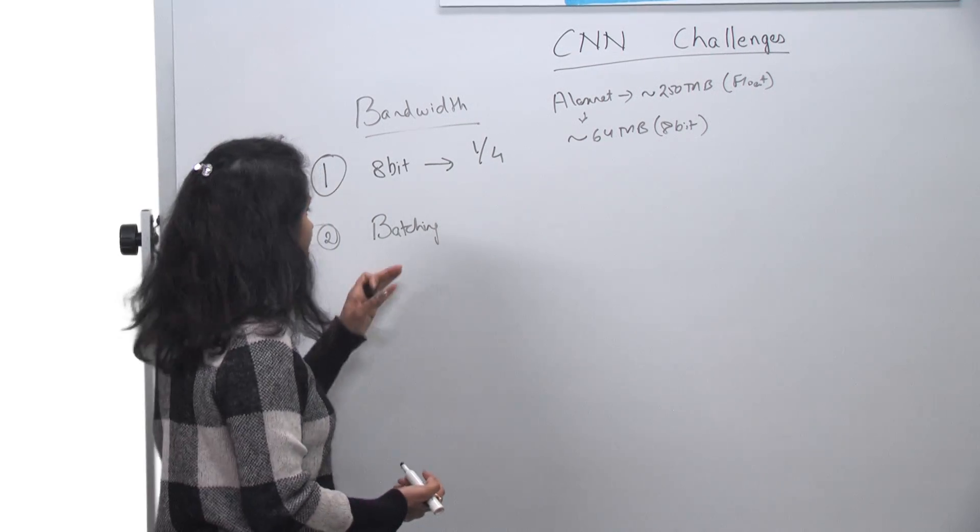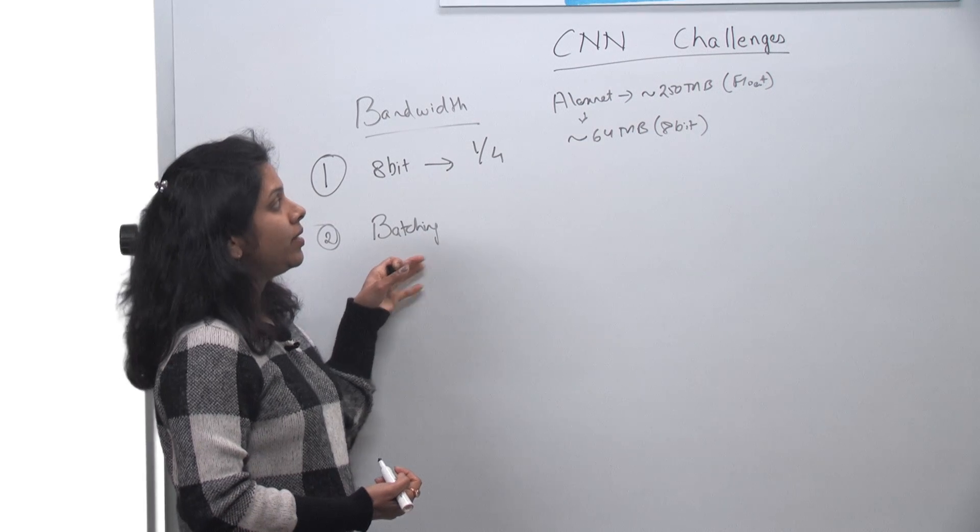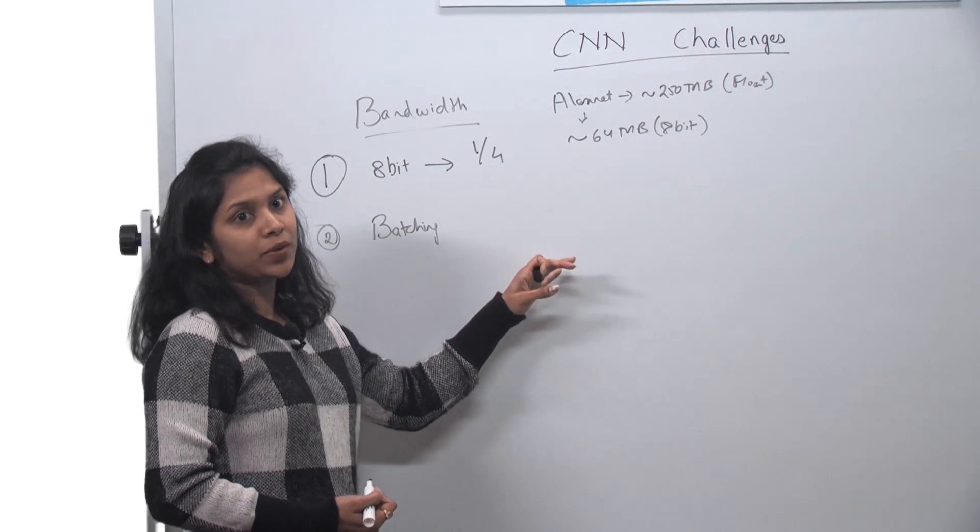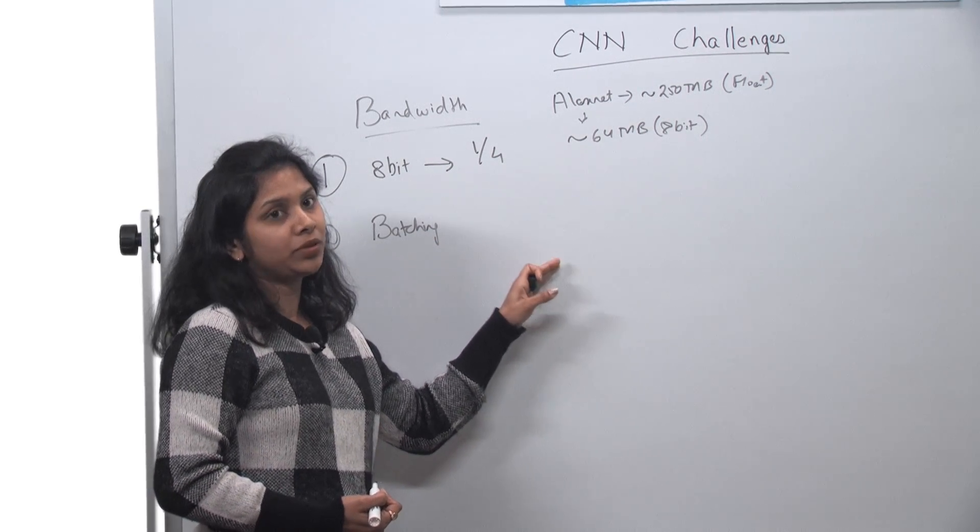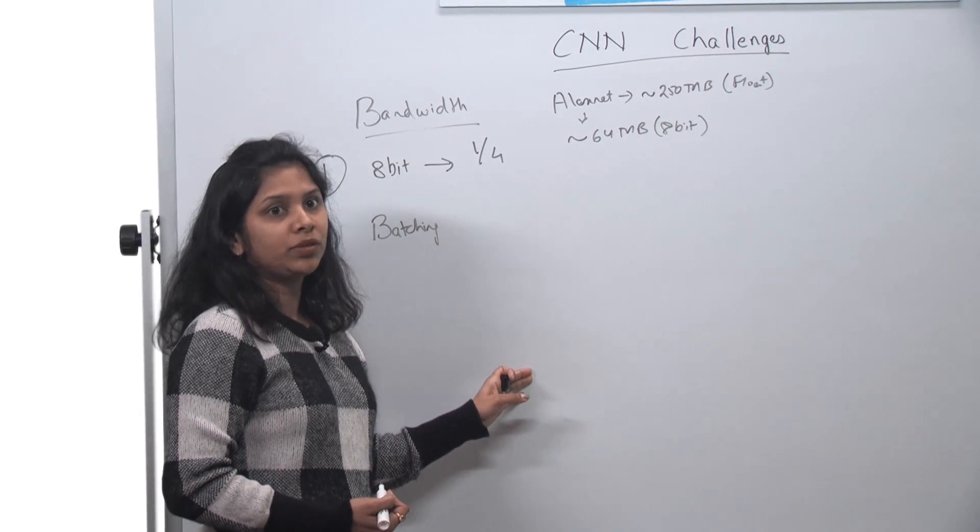So now you are reusing, and that is what batching means. And by reusing, you average out the load store requirement for that layer over those multiple reuses.